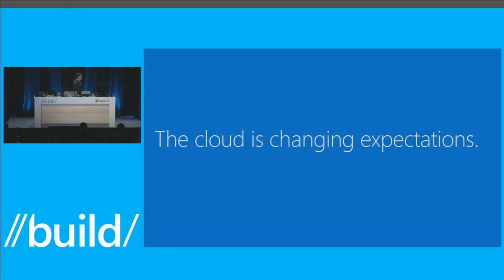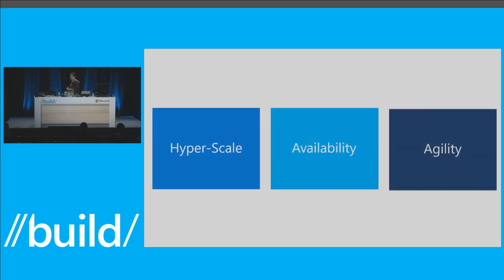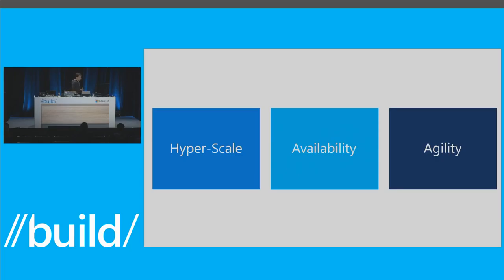The cloud is changing expectations. Things are happening with all the different cloud solutions and the way in which you can approach building technologies and applications. From the core of this, I think there are three big areas where the cloud is changing expectations. One is hyperscale — the expectation that you can grow very, very large, very quickly, spanning multiple machines and globally.